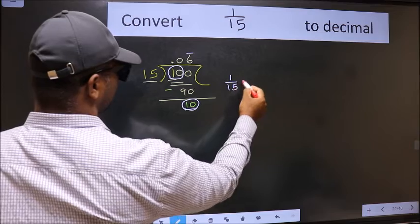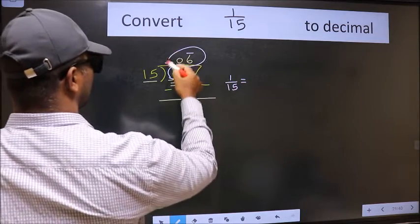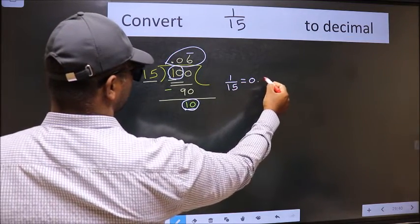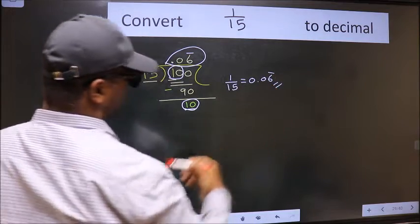decimal of 1 by 15 is this one. 0.06 bar. This is our answer.